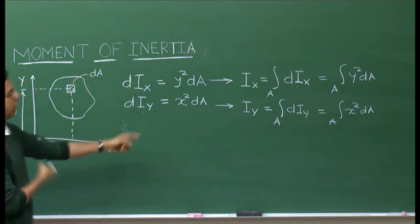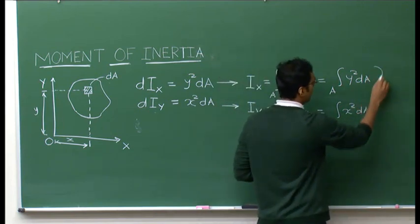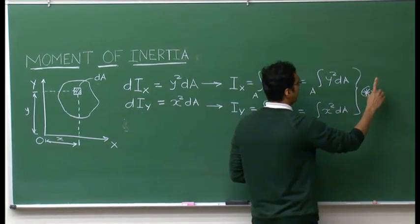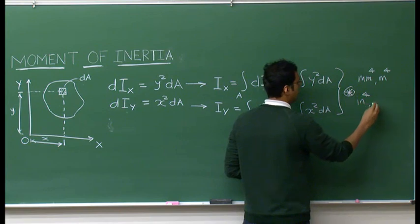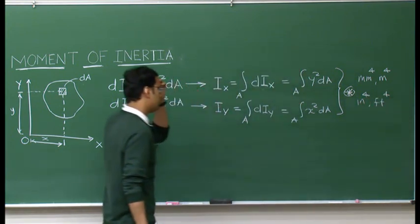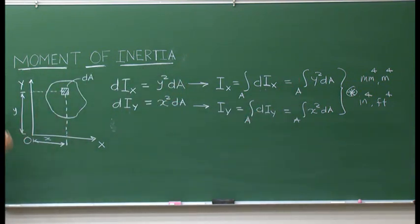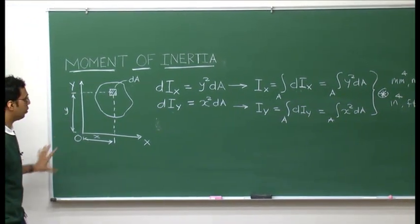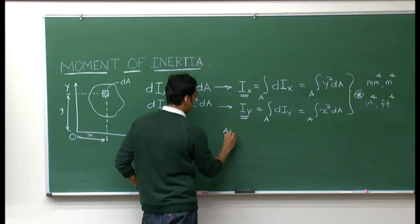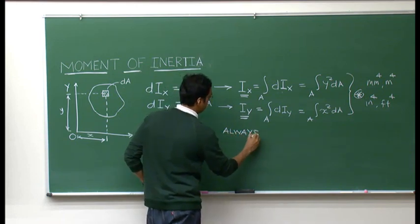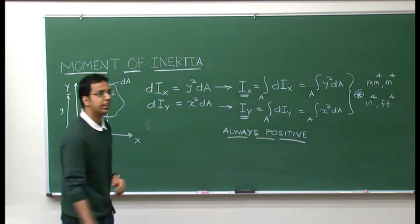Looking at these equations, we have the square of distance y and square of distance x multiplied by the area, so the unit of moment of inertia is mm⁴, m⁴, or meter⁴ in the metric system, or inch⁴ and feet⁴ in US customary units. Importantly, since the distances are squared, even if distances are negative or the body is in a negative quadrant, Ix and Iy are always positive — you cannot have a negative moment of inertia.